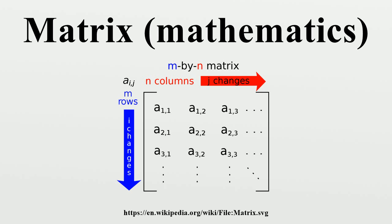An orthogonal matrix is a square matrix with real entries whose columns and rows are orthogonal unit vectors. Equivalently, a matrix A is orthogonal if its transpose is equal to its inverse, which entails A^T A equals A A^T equals I. An orthogonal matrix A is necessarily invertible, unitary, and normal. The determinant of any orthogonal matrix is either plus 1 or minus 1. A special orthogonal matrix is an orthogonal matrix with determinant plus 1. As a linear transformation, every orthogonal matrix with determinant plus 1 is a pure rotation, while every orthogonal matrix with determinant minus 1 is either a pure reflection or a composition of reflection and rotation. The complex analogue of an orthogonal matrix is a unitary matrix.